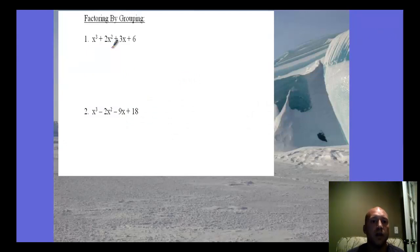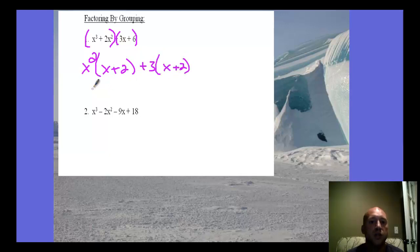We have a factor by grouping here. In this example, I see that in these first 2 terms, they both have X's. In the second 2 terms, they both have 3's. So I'm looking for the common factors. I'm going to pull out the X squared and I'm left with X plus 2. Then the next one I'm pulling out is 3, and I'm left with X plus 2. So I'm going to factor out the X plus 2, and I have X squared plus 3. This would be the factored form of the original problem.